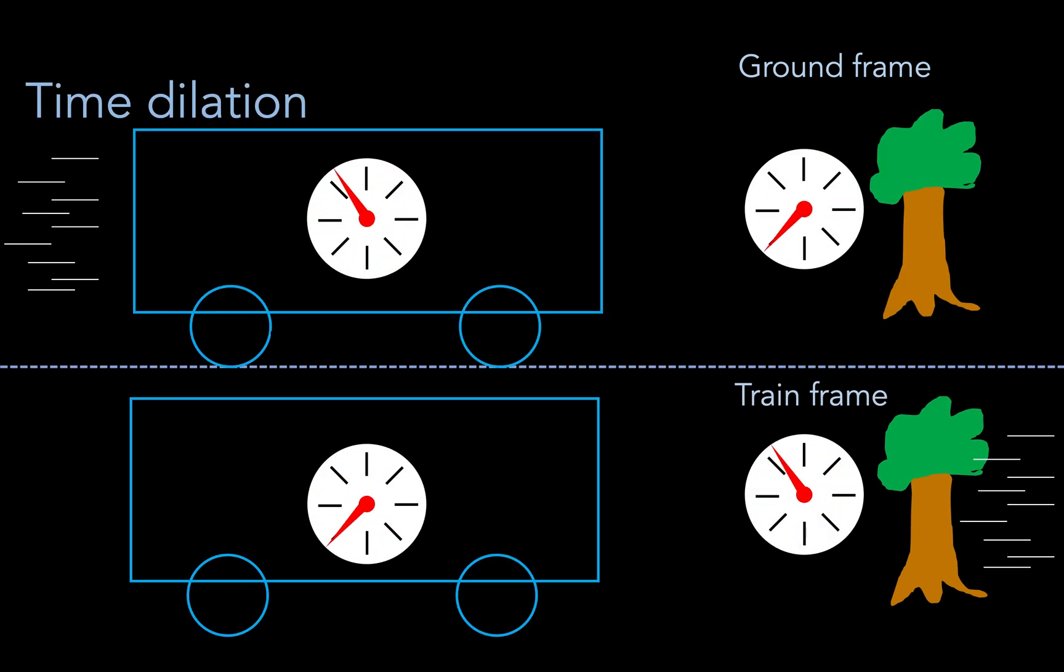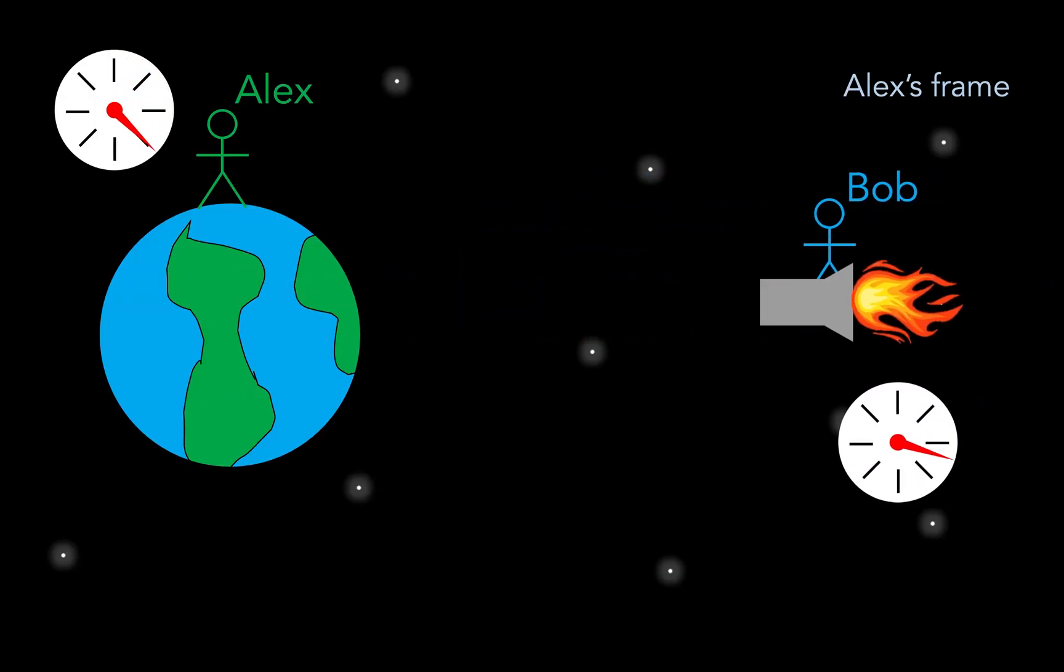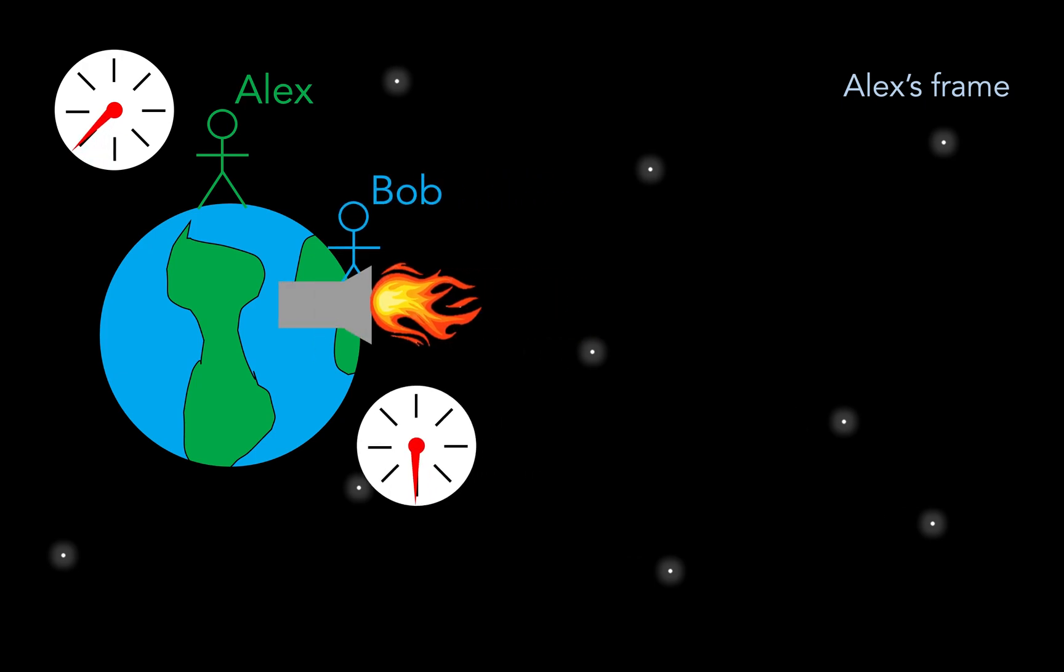Now the tricky part comes when we realize that time dilation happens both ways. So for the train observer, a clock on the ground ticks more slowly than a clock on the train. And this symmetric effect is where the apparent twin paradox comes from. So because of time dilation in Alex's reference frame, Bob's clock will tick more slowly. So when Bob comes back to Earth, he will have aged slightly less than Alex. In other words, Bob will be younger than Alex.